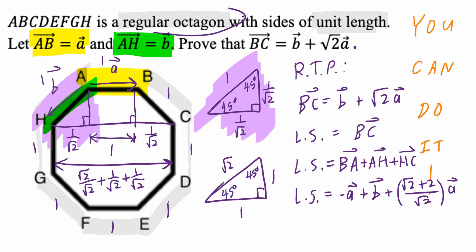root 2 plus 2 divided by the common denominator root 2 times vector A. Again, it's a regular octagon. So this vector AB, it's parallel to vector HC. This is only true because it's a regular octagon with side lengths of 1. Everything has all these properties associated with.